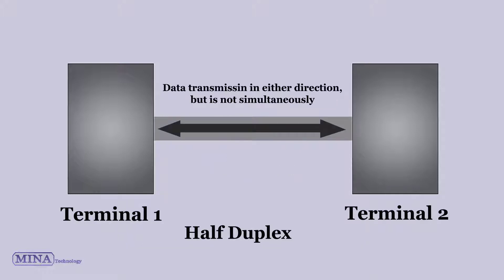Half-duplex. In this mode, data transmission is in either direction but not simultaneously. Data can be transmitted terminal 1 to terminal 2 or terminal 2 to terminal 1.